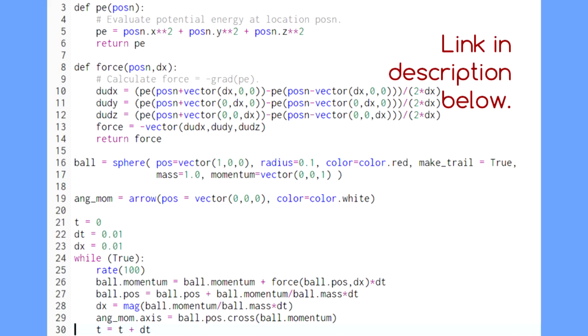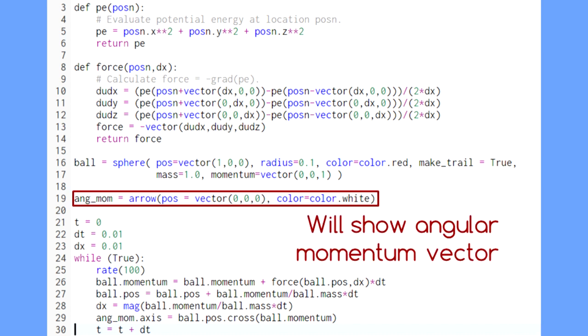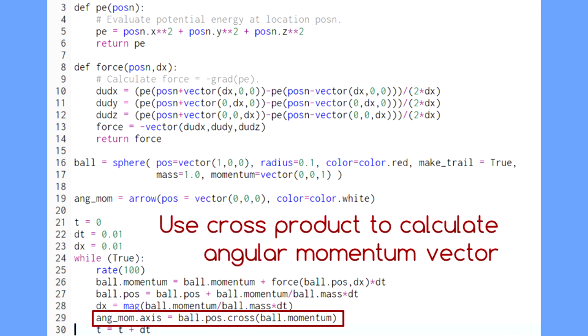We can check whether angular momentum is conserved in our code. Here's our potential energy-based Euler-Cromer code from last time, but now we've added an arrow to represent the angular momentum. With each pass around the loop, we update this arrow to show the angular momentum, the cross product of position with momentum.